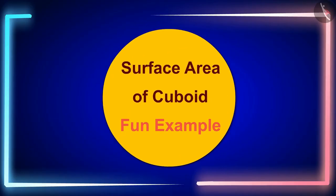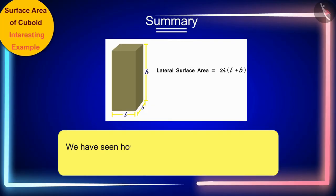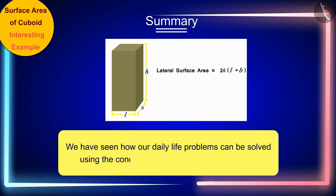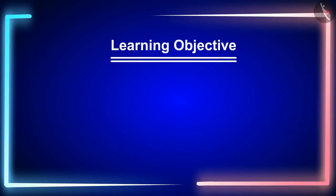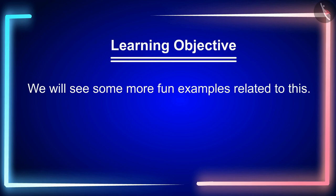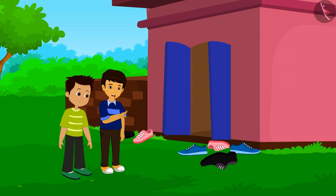Welcome to this video. In the previous video we saw some interesting examples based on the surface area of a cuboid. In this video we will see some more fun examples related to this. Thomas, why are all your shoes scattered like this?